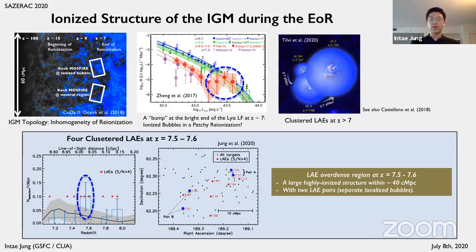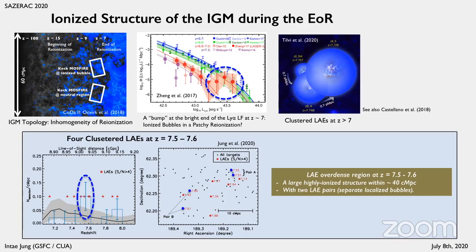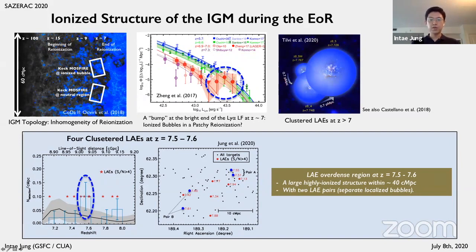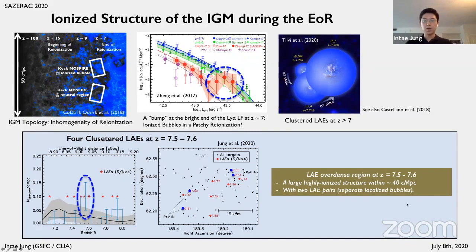Relating to such large variation, the IGM topology matters, as reionization is an inhomogeneous process. In this context, we study the spatial clustering of Lyman-alpha emitters. The left panel presents the number of detected Lyman-alpha emitters along the line-of-sight direction and the spatial distribution on the right. A notable feature is a peak near redshift 7.5 to 7.6, where we detect more Lyman-alpha emitters than expected. The blue dots on the right are the clustered Lyman-alpha emitters, forming two pairs. These results indicate the presence of a large, highly ionized structure with a spatial extent of 40 comoving megaparsecs containing two locally ionized bubbles. All of these findings provide evidence of the inhomogeneity of reionization.